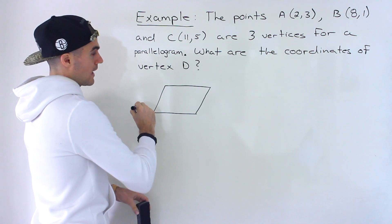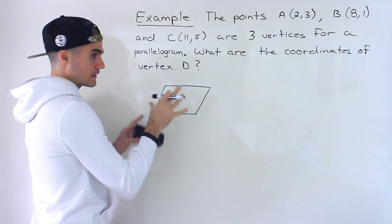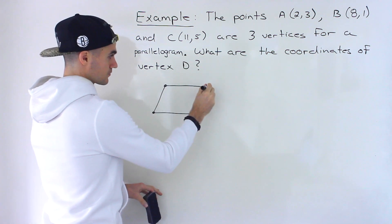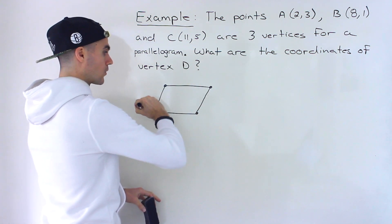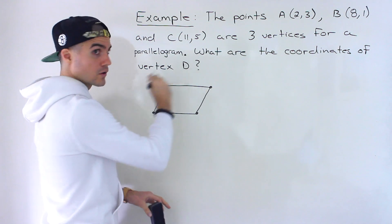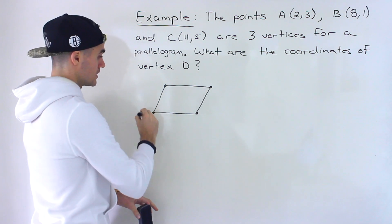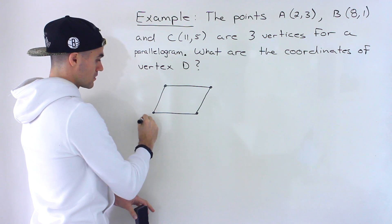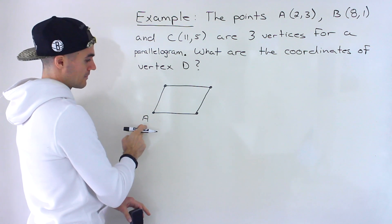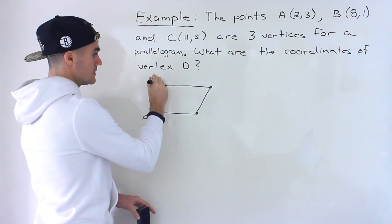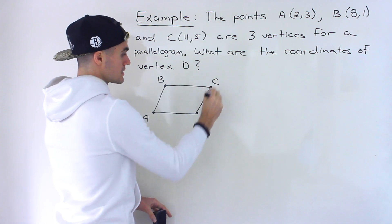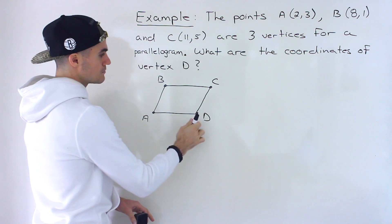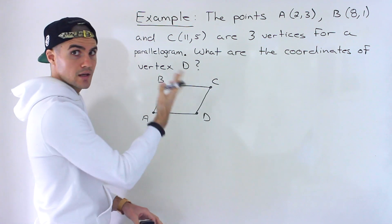And then we have coordinates. So remember when you're labeling these with letters, the vertices, you want to make sure that you're going in order either clockwise or counterclockwise. So usually I go clockwise and I start over here at the bottom left. So we got A, we got B, C, and D like that. But you could also do A, B, C, and D as well.